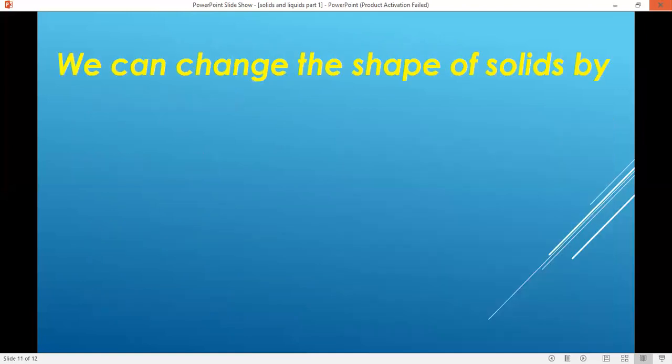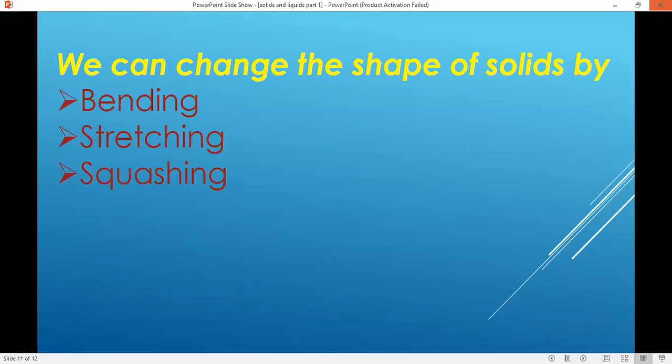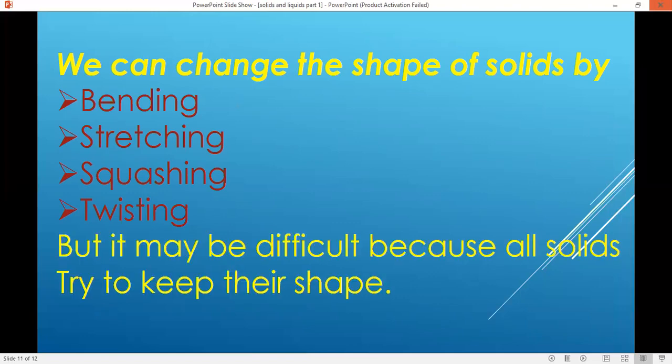We can change the shape of solids by bending, stretching, scratching and twisting. Means if you bend some solid or if you stretch something or if you scratch something or you twist some solid, then maybe it change its shape, but it is very difficult because all solids try to keep their shape.